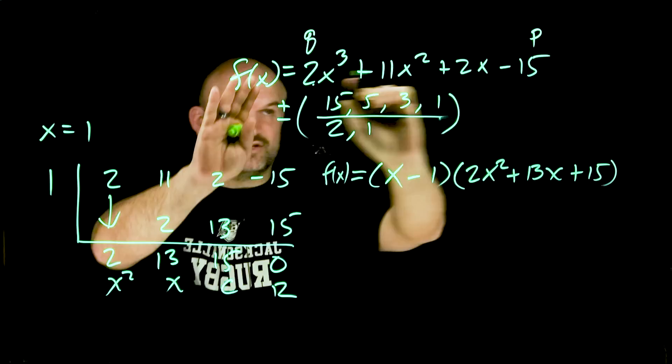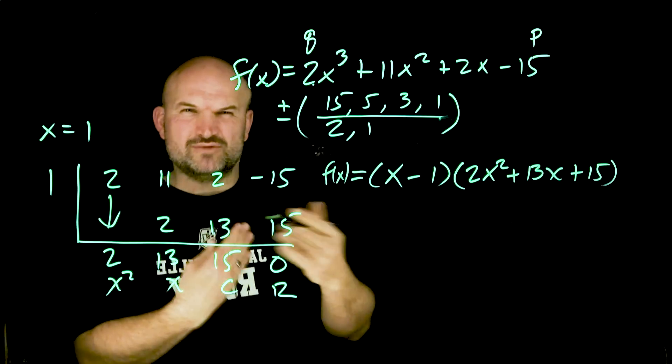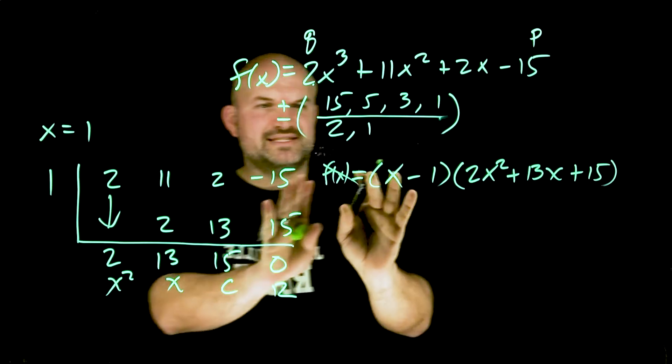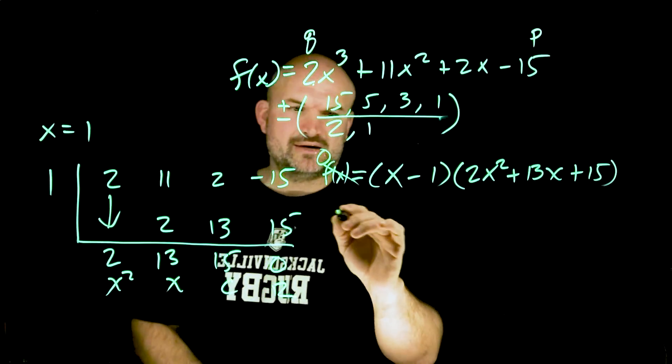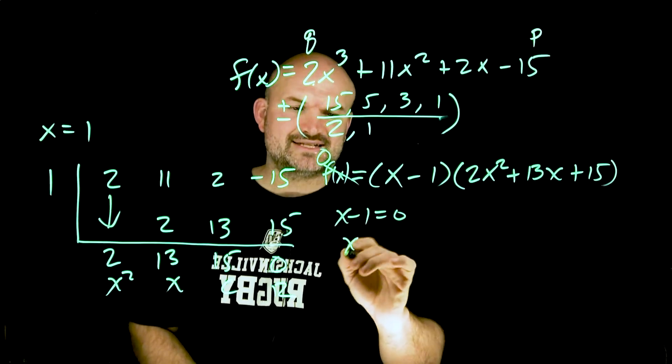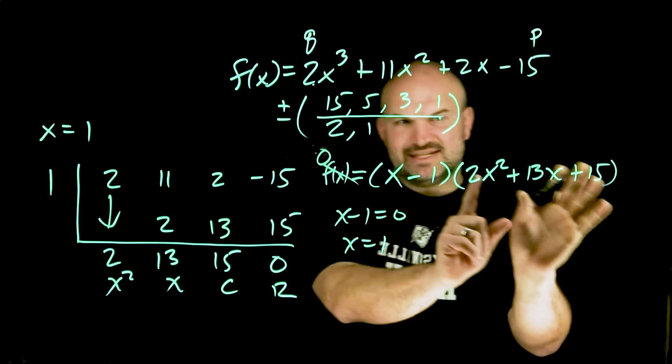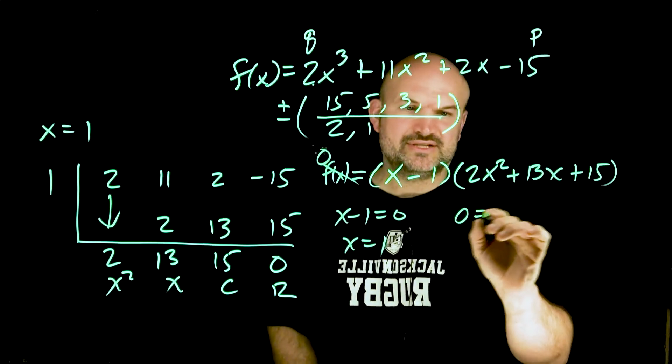This times this is going to give you that. But remember the question is what are the zeros? In this case we want to find the zeros. You would set that equal to zero, apply the zero product property. We already know that x equals 1 is going to be a zero.